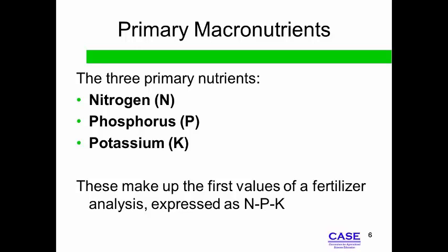If an element of N, P, or K is not present in a fertilizer, the fertilizer bag will use a zero for that element, such as 16-0-8. Secondary macronutrients and micronutrients are not represented by zero numbers if they are not present in a fertilizer.